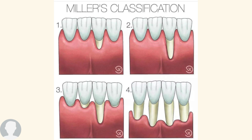Class 3 extends beyond the mucogingival junction with mild bone or soft tissue loss — multiple teeth are involved but the degree of recession is mild. Class 4 extends beyond the mucogingival junction with severe bone and soft tissue loss, in which more than one tooth is involved. In the picture you can see all four teeth are affected with Class 4 recession.